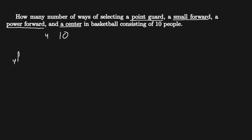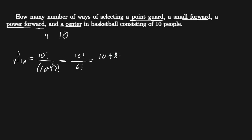This is 10 permute 4, which equals 10 factorial over (10 minus 4) factorial, which equals 10 factorial over 6 factorial. Expanding: 10 times 9 times 8 times 7 times 6 factorial, all over 6 factorial. The 6 factorials cancel, leaving 10 times 9 times 8 times 7, which equals 5,040. So there are 5,040 different ways using the permutation formula.